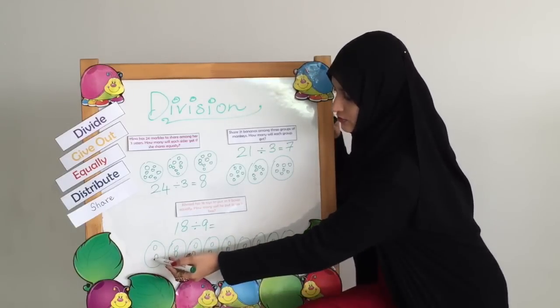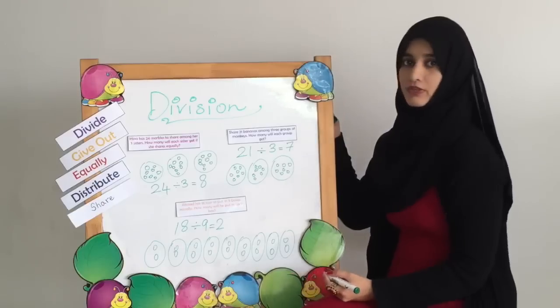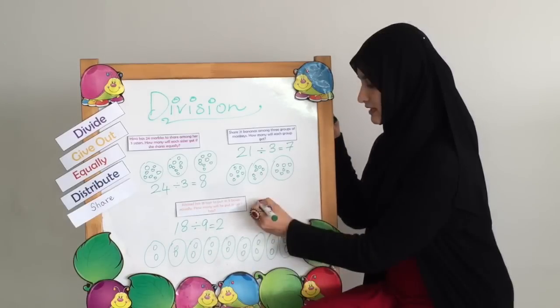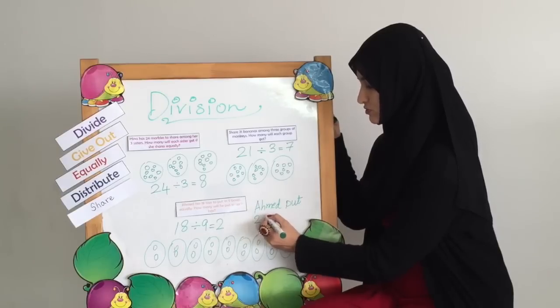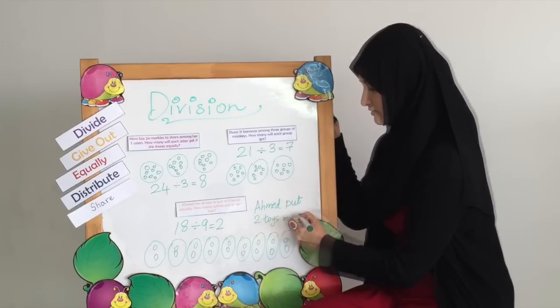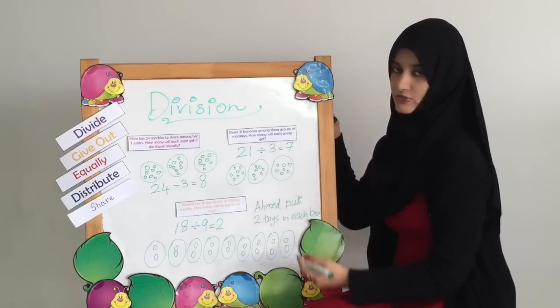In one box we have two toys. So the answer is two. And when we are solving these questions we need to write a sentence. So we say Ahmed put two toys in each box. We are going to write the same for these questions as well.